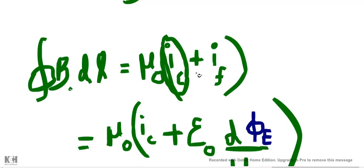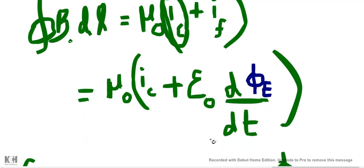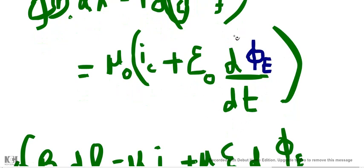If we see the field of Ampere's law, then here is a rate of change of magnetic flux — this is the electric flux. The electric flux is q over epsilon-zero. The rate of change dq/dt is the rate of change of charge. The electric field is the current.